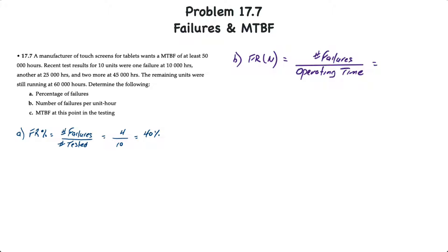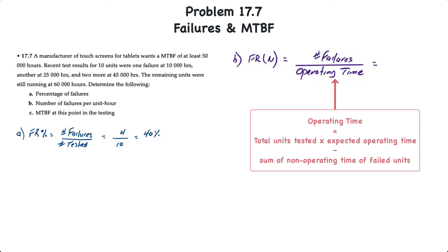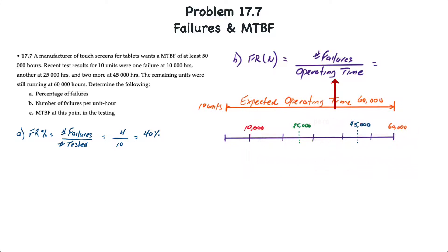For requirement two, the number of failures per unit hour — also known as FRN — is equal to the number of failures divided by the operating time. The operating time in the denominator is based on the total number of units tested multiplied by the 60,000-hour full operating time, less the non-operating time of all units that failed. It helps to draw a timeline to see when each unit failed.